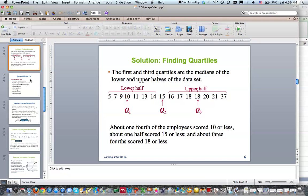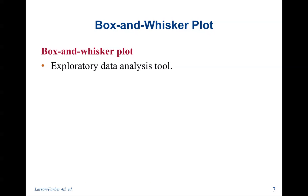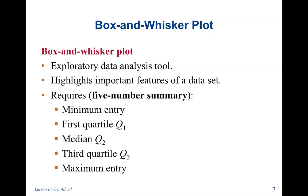So the next thing we're going to look at is a box and whisker plot. A box and whisker plot is an exploratory data analysis tool. It highlights important features of a data set, and it requires a five number summary. So we take our quartiles and we include the minimum and the maximum value to show where our box and whisker plot starts and ends.